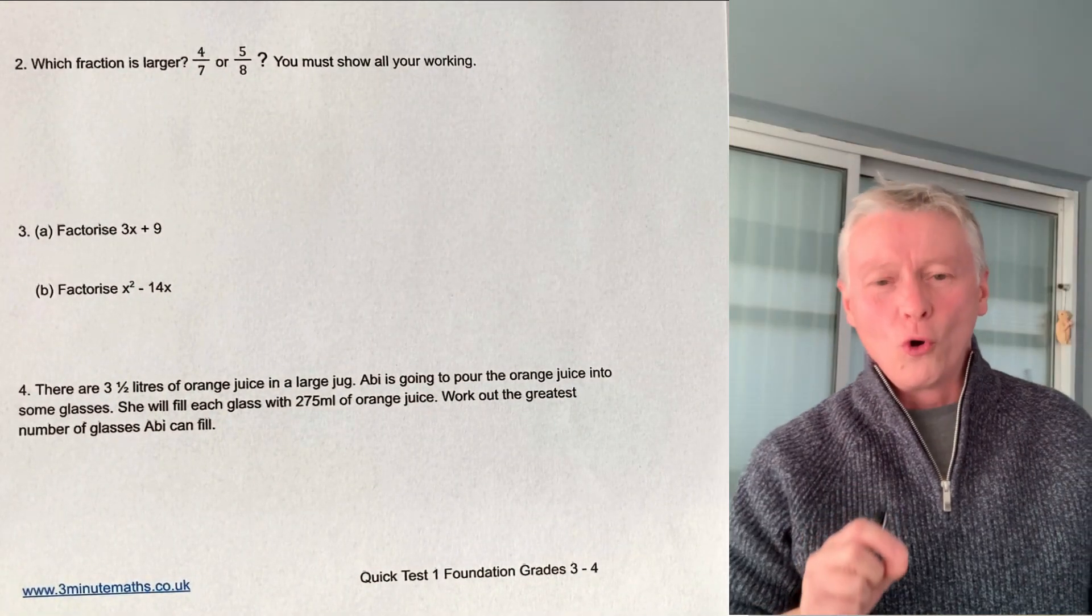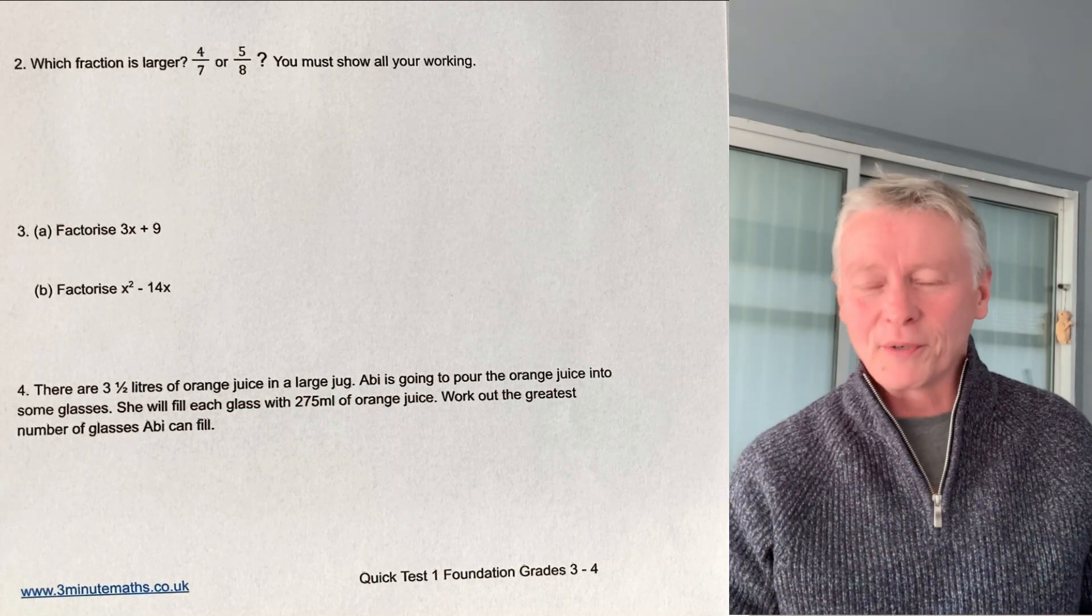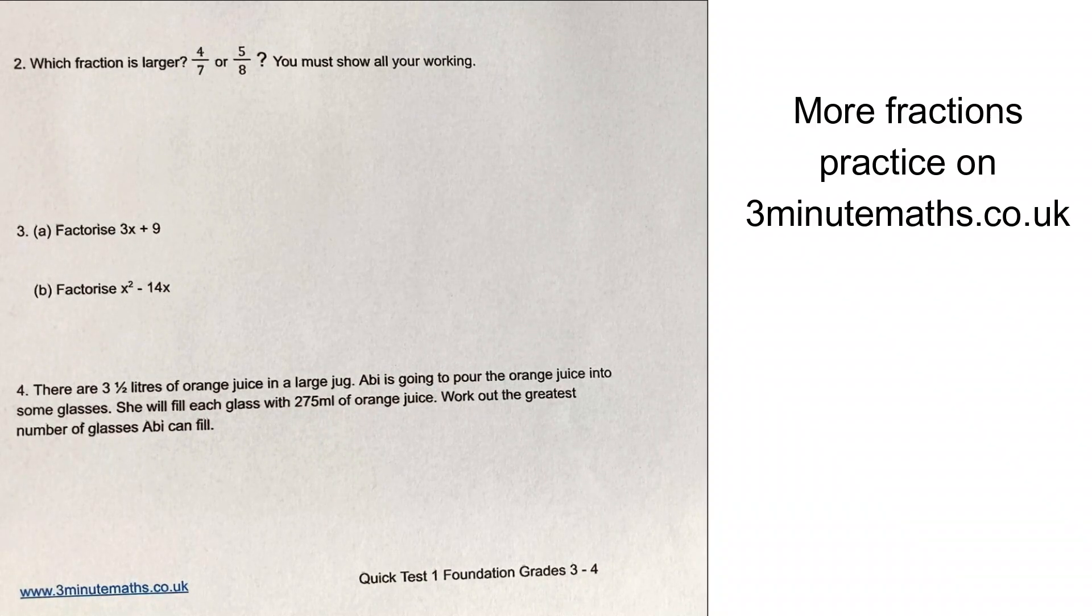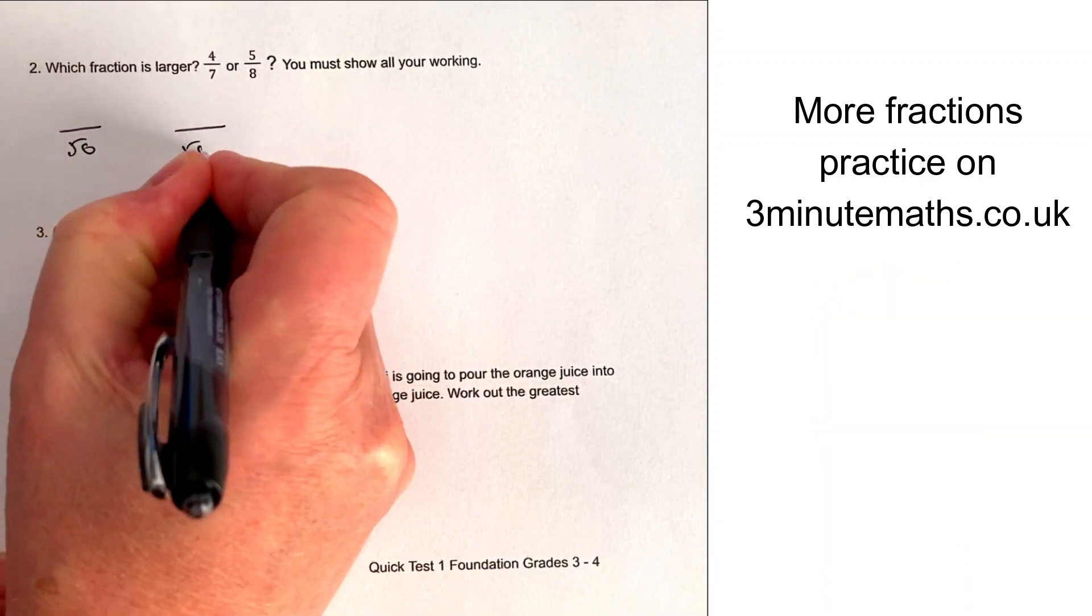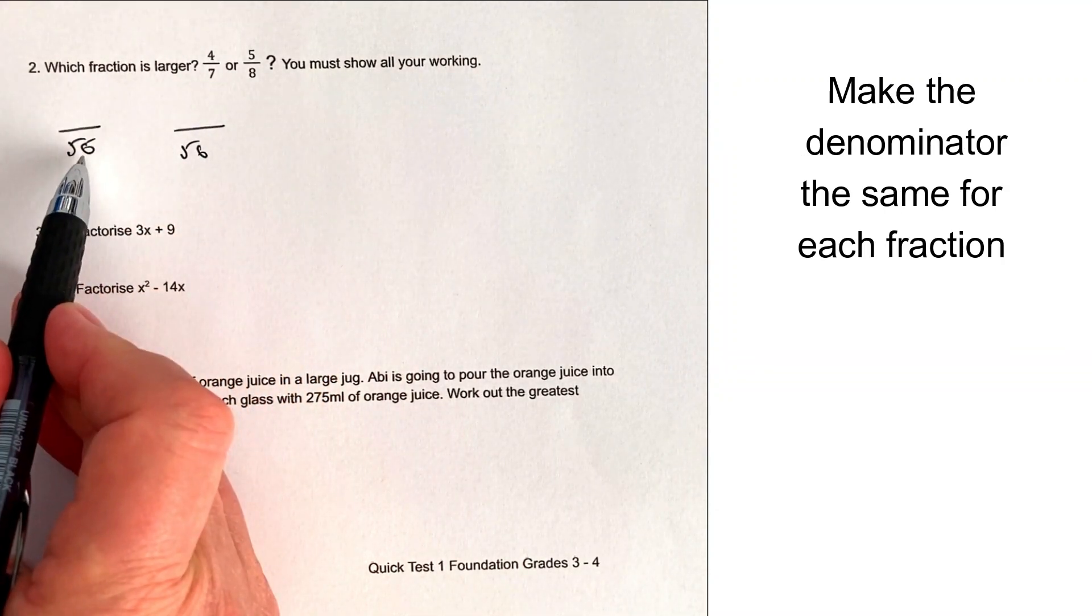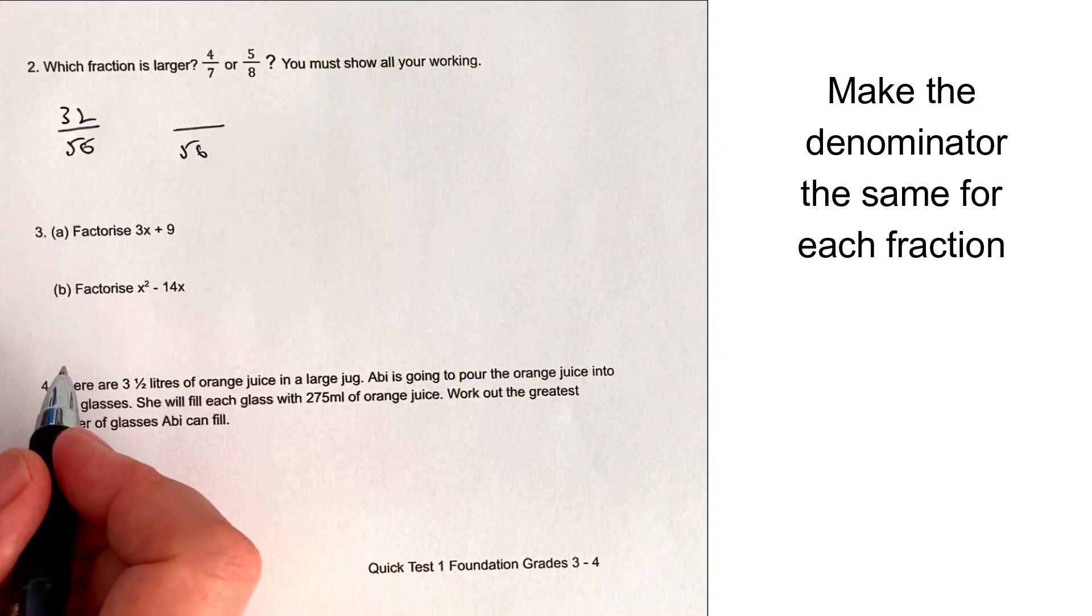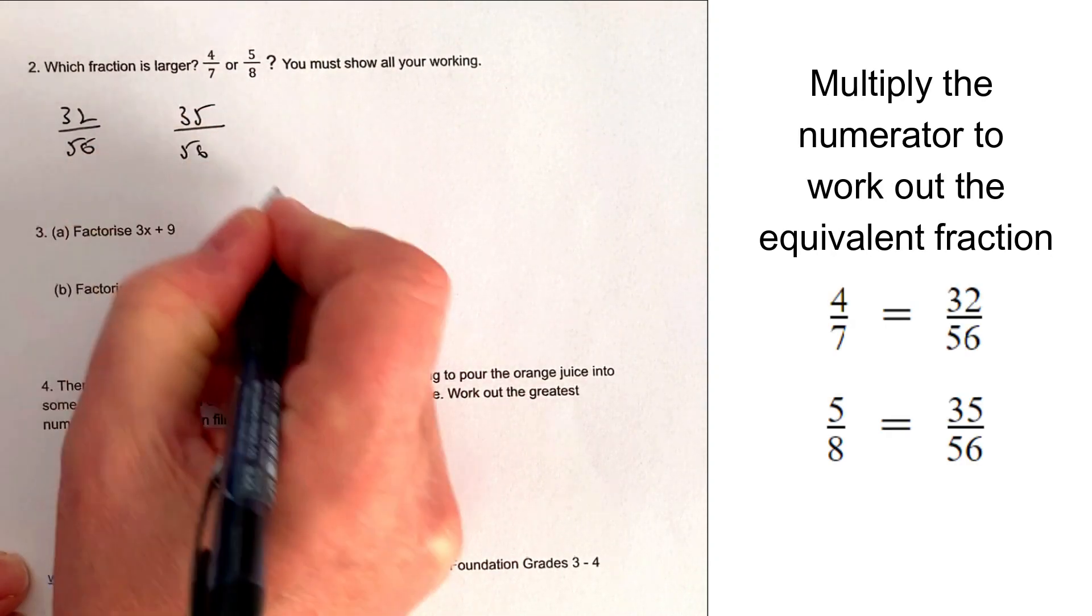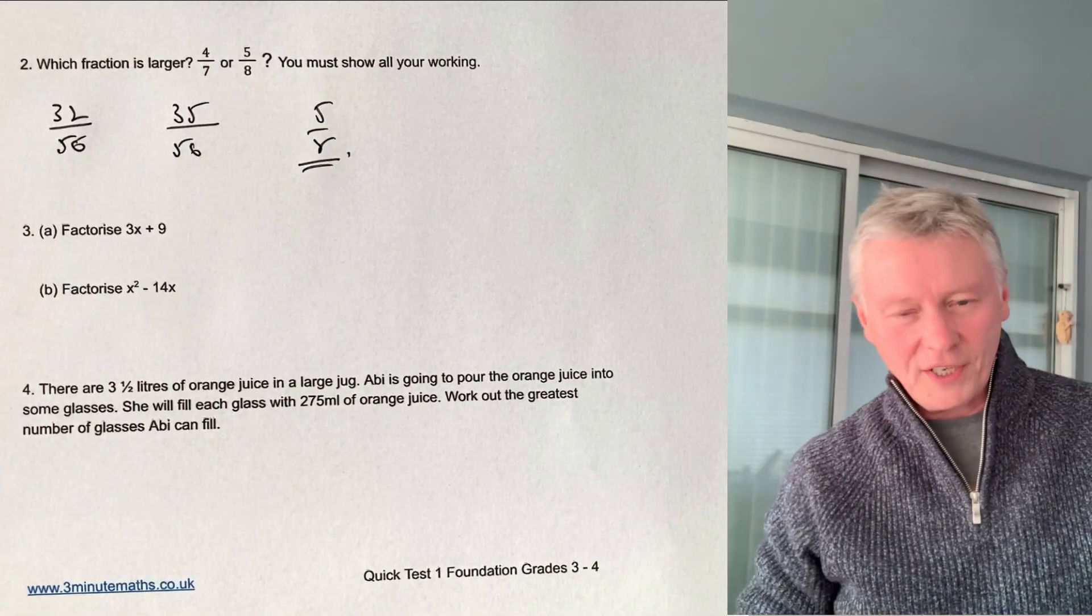Let's move on then to question number 2. Best advice here is always make sure you're up to speed with working with fractions. They are making a bit of a re-emergence with a lot of these papers. In this particular case, we're going to work out a comparison. So in order to compare these two fractions, I'm going to make the denominators the same. So in both cases, I'm going to make them 56, because I can say 7 times 8 is 56, and 8 times 4 is 32, so the direct comparison is 32 over 56. 7 times 8 is going to be 56, so 7 times 5 is 35. So the fraction that is larger is going to be 5 eighths.